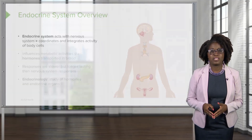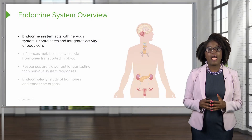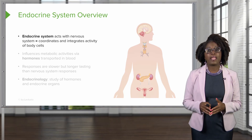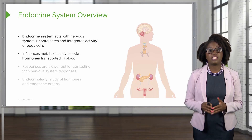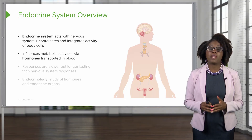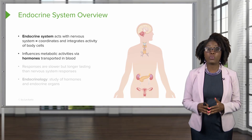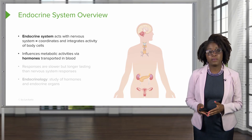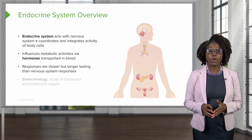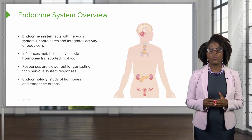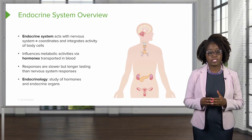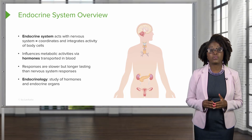Welcome. In this lecture, we will be looking at the endocrine system. The endocrine system acts with our nervous system to coordinate and integrate the activity of our body's cells. It does this by influencing metabolic activity via hormones that are transported in our blood. Responses are slower but longer lasting than that of the nervous system responses. When we study how the endocrine system works, we refer to this as endocrinology.